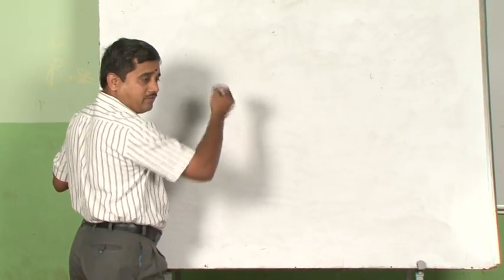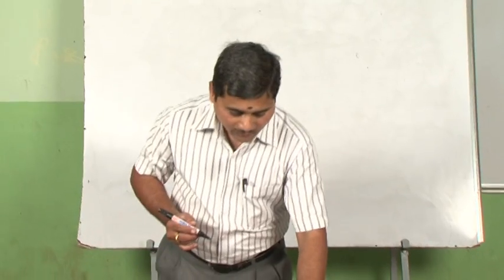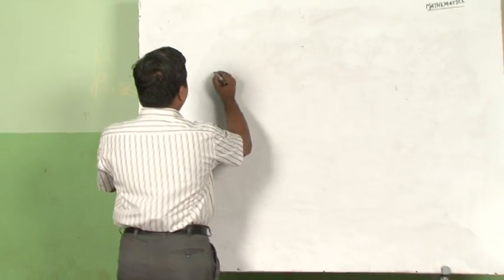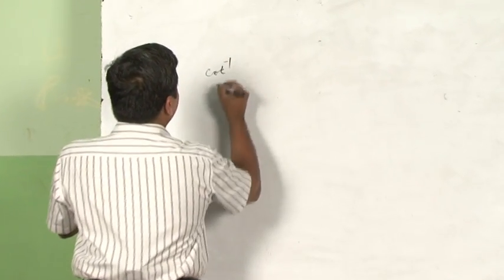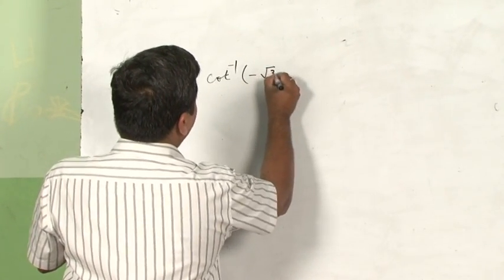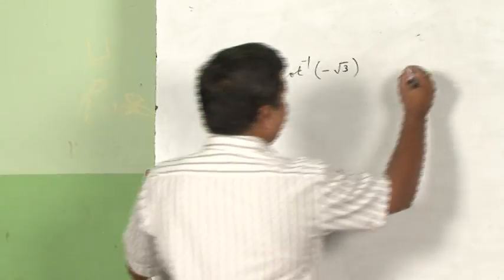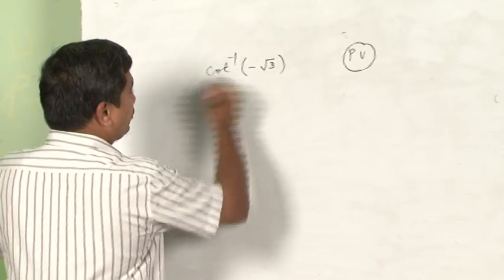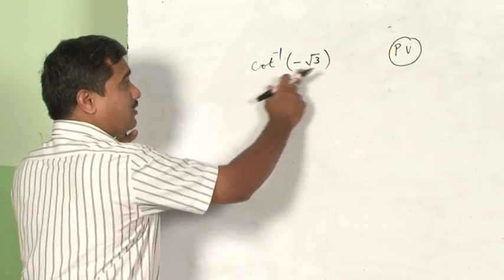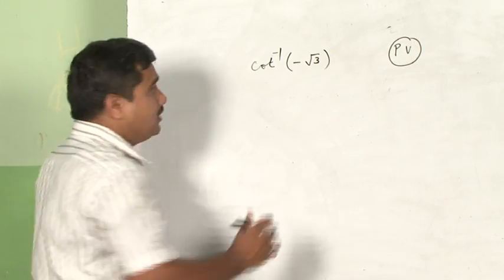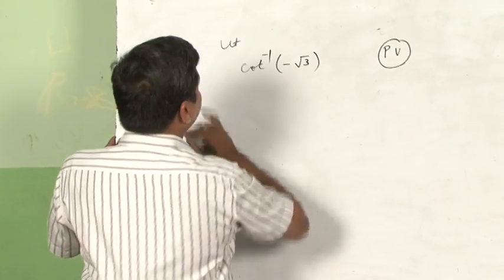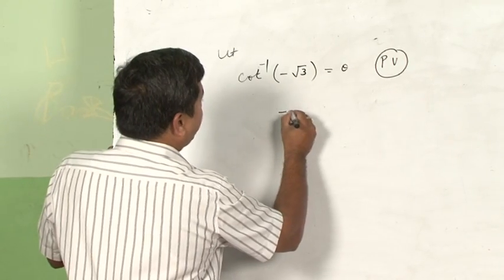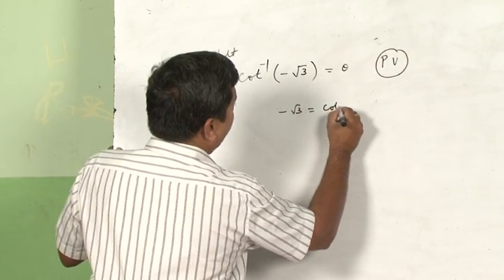Now I will take one more problem to help you understand how to identify the principal value branch. For example, you have cot⁻¹(-√3) — you need to identify its principal value. Since inverse trigonometric functions are always angles, we let cot⁻¹(-√3) = θ, which gives us cot θ = -√3.